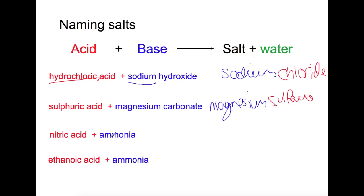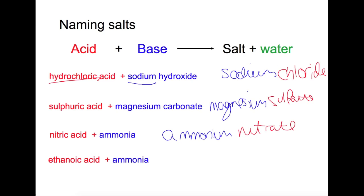Here we have ammonia and nitric acid, so ammonia becomes ammonium and nitric acid will become a nitrate salt. The final example is ammonia and ethanoic acid, so you'll get an ammonium salt again and this time it's ethanoate as your negative ion.